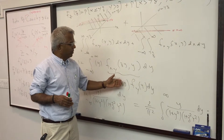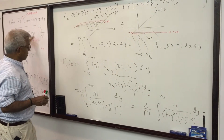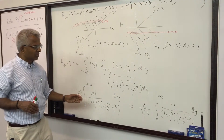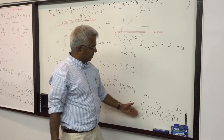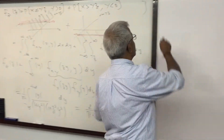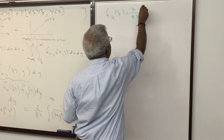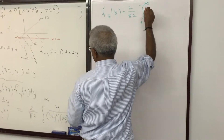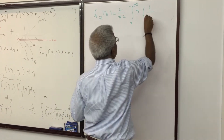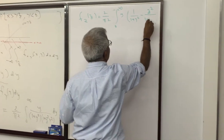Since X and Y are independent, the joint density factors into the product of the individual densities. Plugging in the Cauchy density functions, and noting that the Cauchy density is an even function, we can simplify this to 2/π² multiplied by the remaining integral. This is where our simplification starts, and f_Z(z) will be expressed as 2/π² times an integral from 0 to ∞.